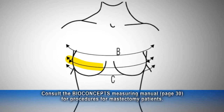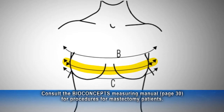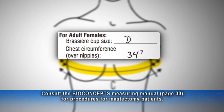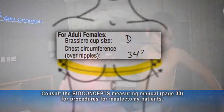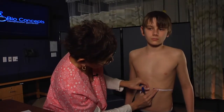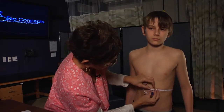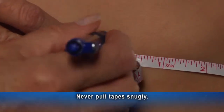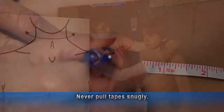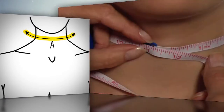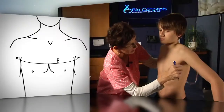When measuring an adult female for a vest, measure the torso circumference over the breasts and record the self-reported bra cup size. Use Bio Concepts retractable tape for circumference measurements and remember — never pull the tape snugly. The capital A measurement is the circumference of the neck.